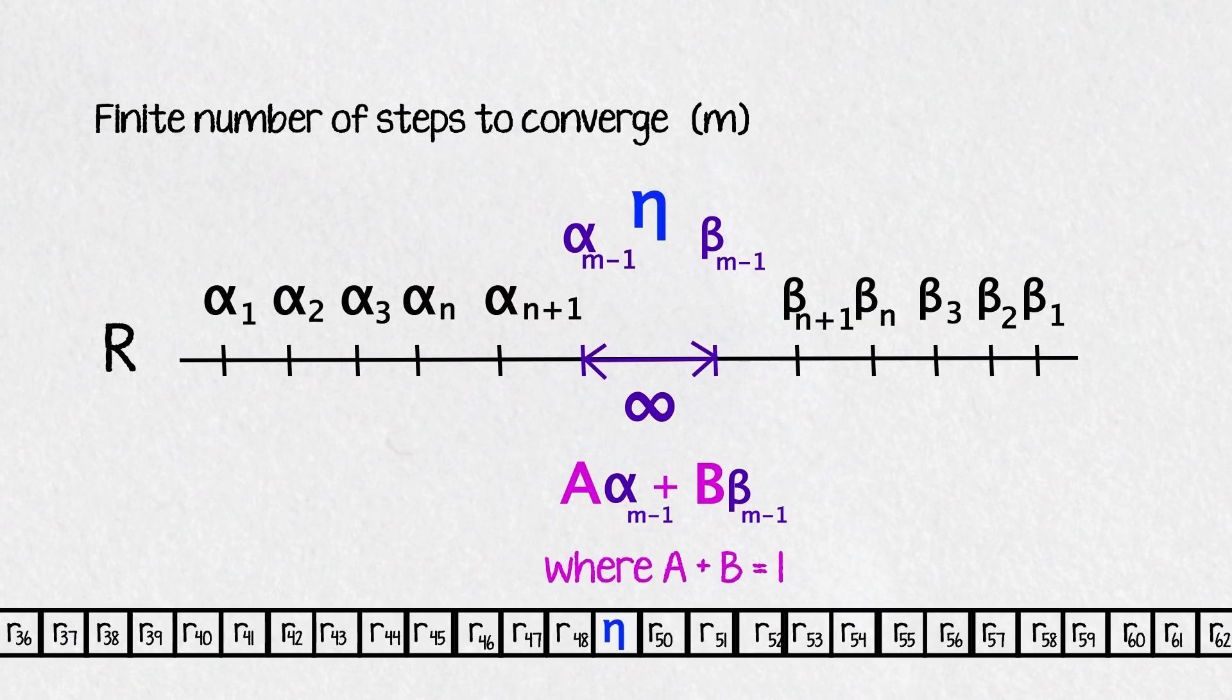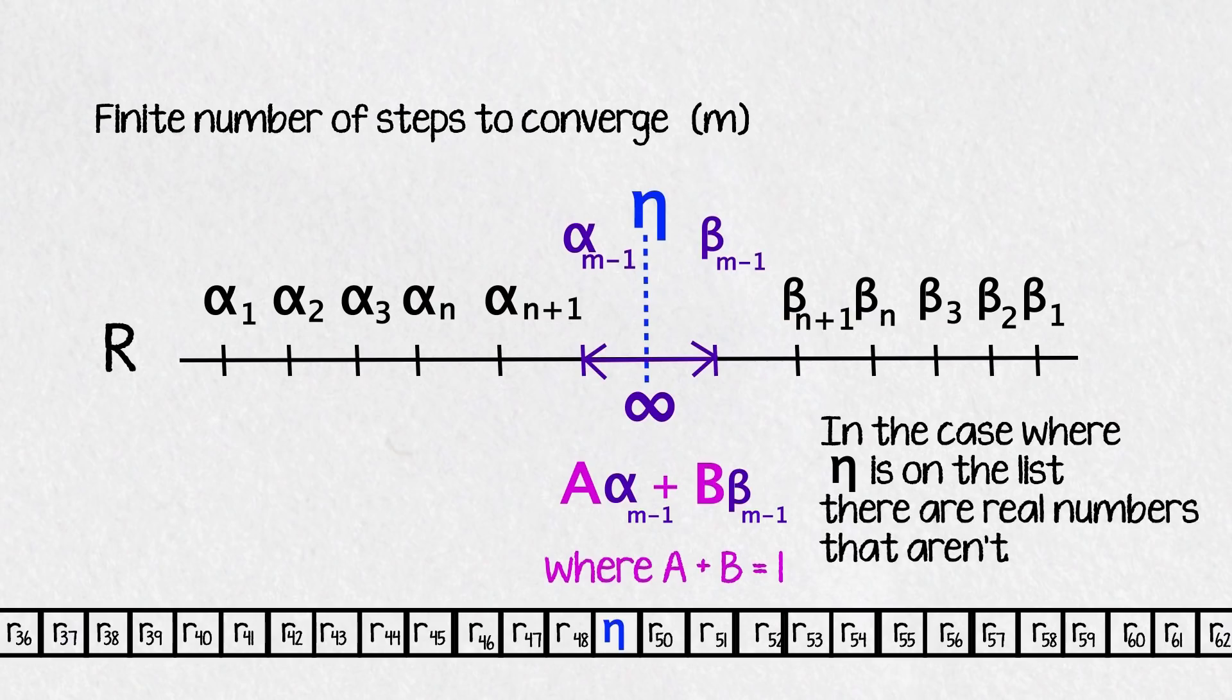So then if we do find the real number eta that means we're missing all the real numbers between alpha m minus 1 and beta m minus 1 except eta. So in the case where the series converge to eta in a finite number of steps and eta is on the list, there are real numbers that aren't.